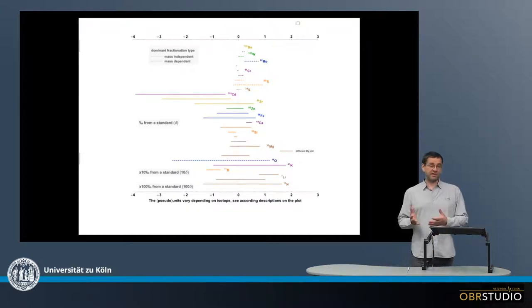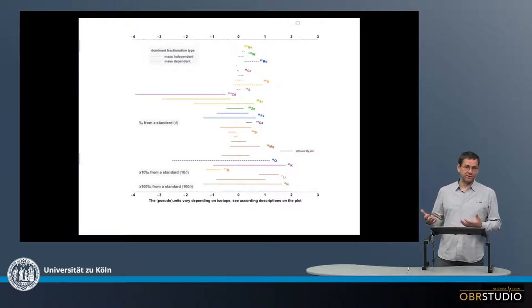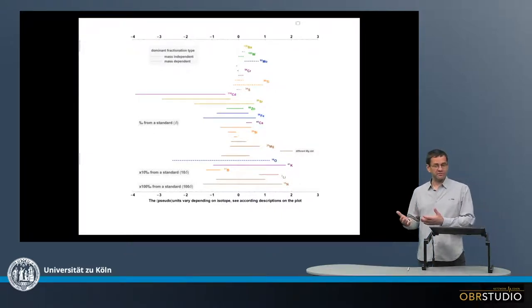Chondrites have large variations in their isotope compositions. Now these variations not only depend on the isotope we look at, but also on the process that produced these variations.